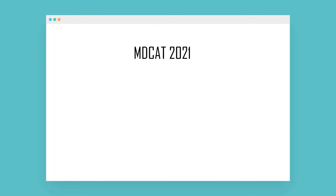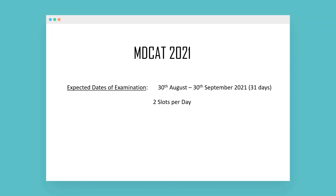One more important thing: PMC has announced expected exam dates from 30 August to 30 September 2021, giving 31 days with two slots per day. There is uncertainty about how they will implement this, as PMC will need to create 62 different versions of the MDCAT 2021 to prevent paper leaks. There are also serious cybersecurity questions — with a computer-based system, how will they ensure no hacking and that students' data is properly safeguarded?